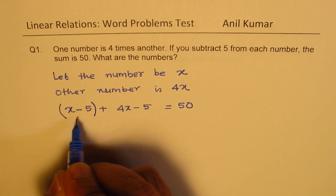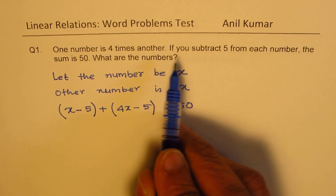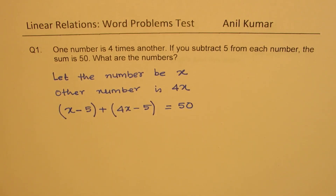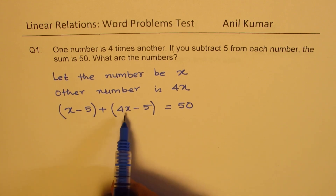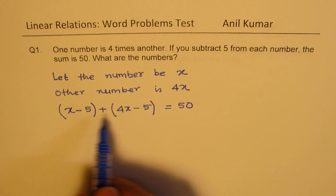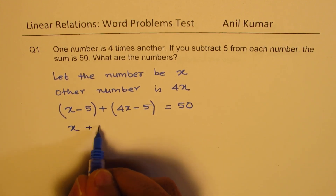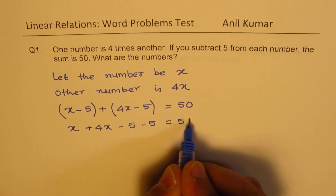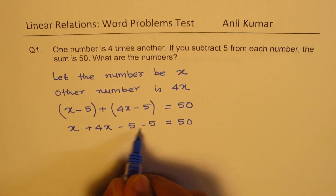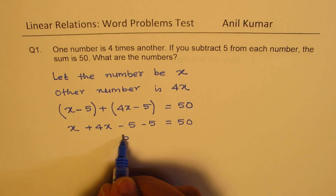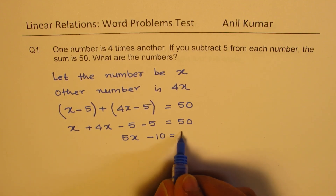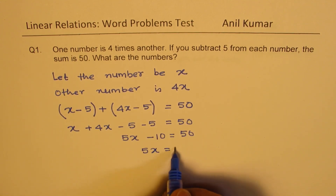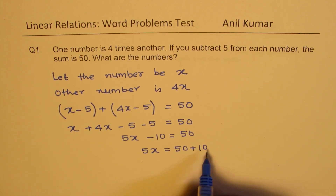So you can think like this: this was the first number, that is the other number. If you subtract five from each number, the sum is 50. We have to find x, the only variable. Combining like terms: x plus 4x, and minus five minus five equals 50. So that is 5x minus 10 equals 50. Now add 10 to both sides, so we get 5x equals 50 plus 10, which is 60.